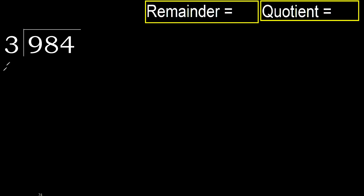984 divided by 3. Starting with 9: 3 multiplied by which number is nearest to 9 but not greater. 3 multiplied by 4 is 12, which is greater. 3 multiplied by 3 is 9, which is not greater. Subtract 9 minus 9 equals 0.